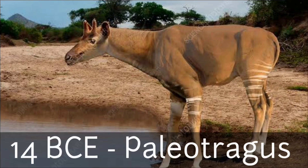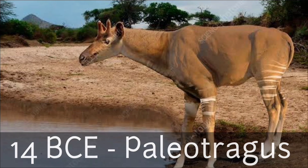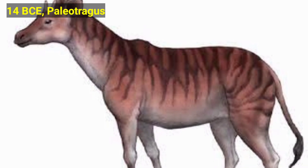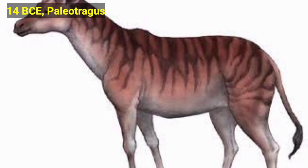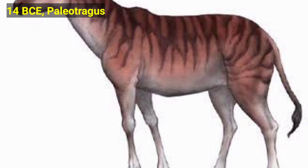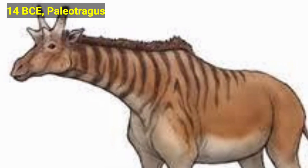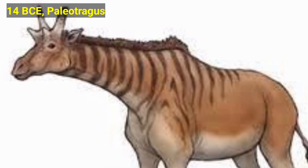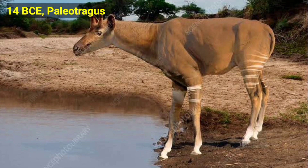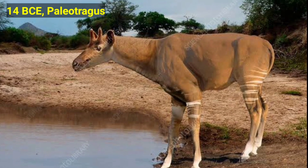Later on in 14 BCE, there were Paleotragus. These are short-necked giraffids with complete skin-covered horns that lived 1.7 million years ago. Paleotragus is a genus of very large, primitive, okapi-like giraffids from the Miocene of Africa and Eurasia.